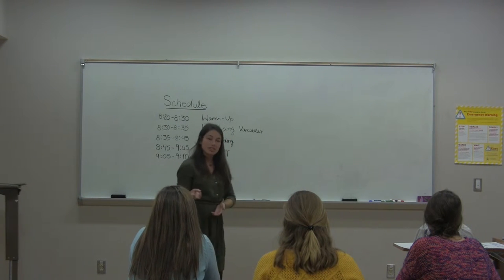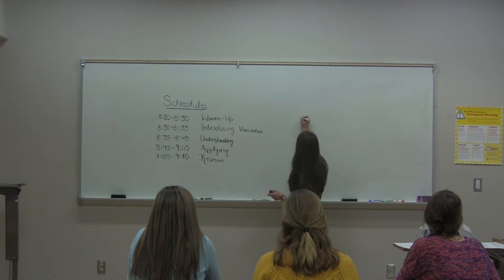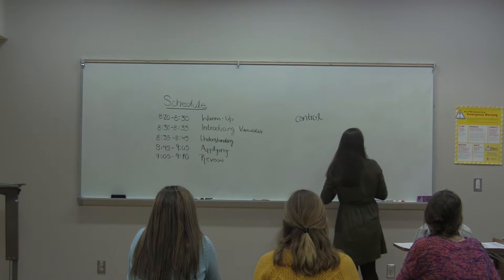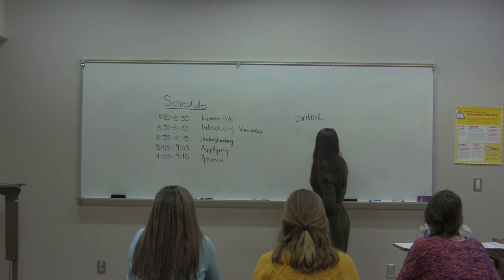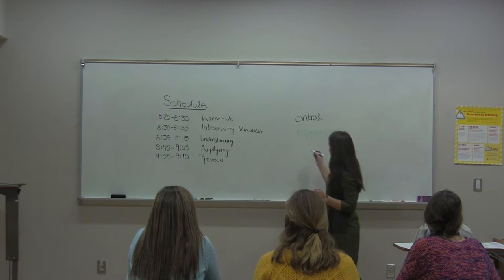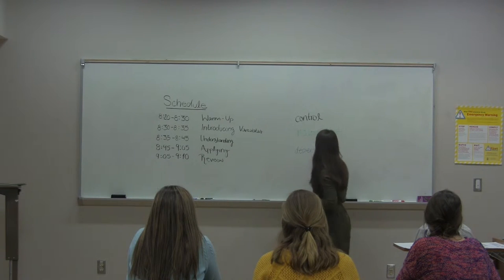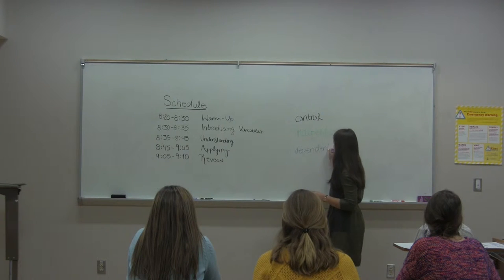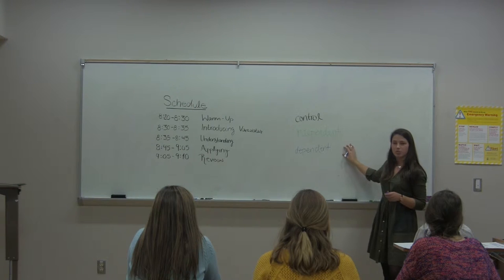There are actually three different types of variables in an experiment. The first one is a control variable, and the second one is something we call an independent variable. To help explain this, I'm going to use a little bit of simple math. I want you all to think about what you know about each of these words.